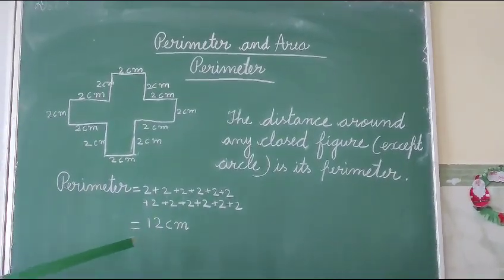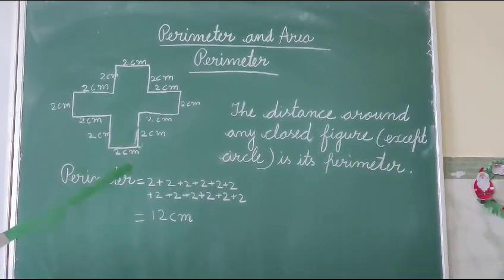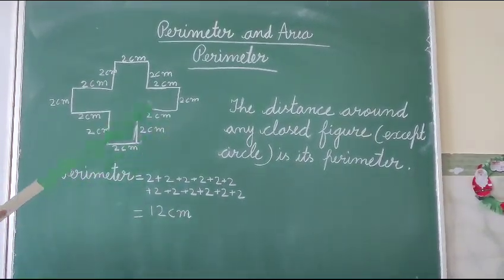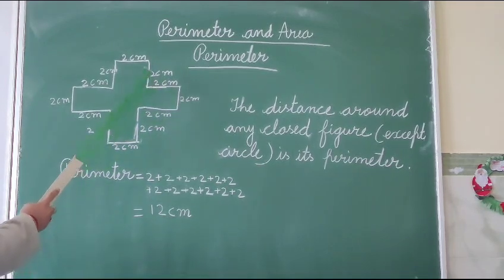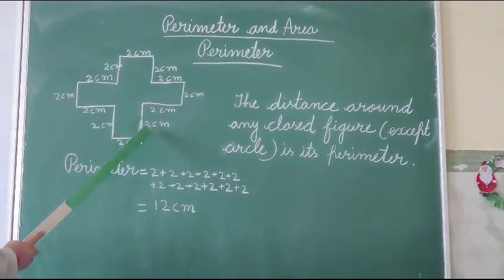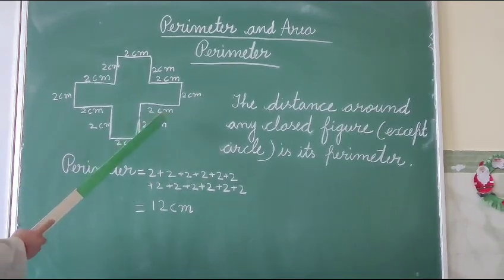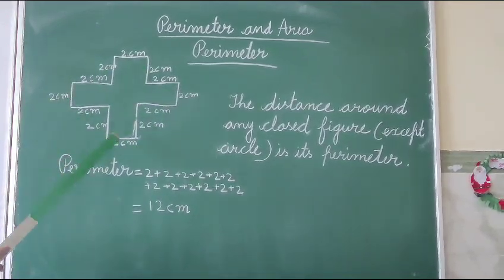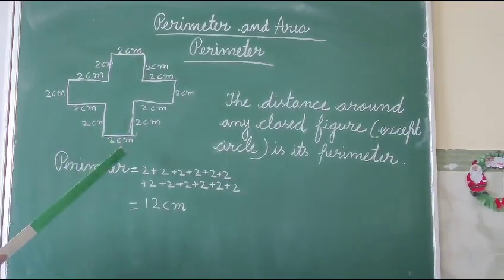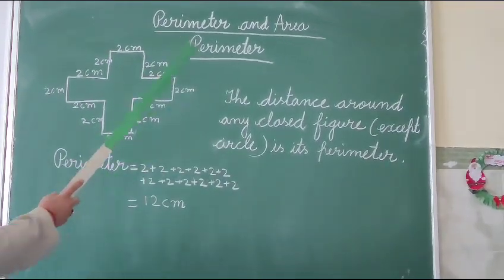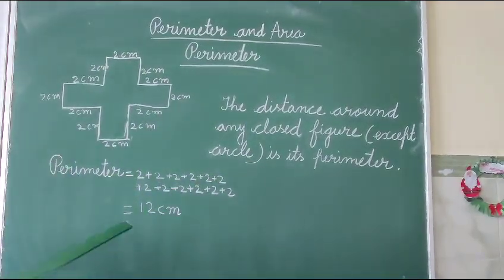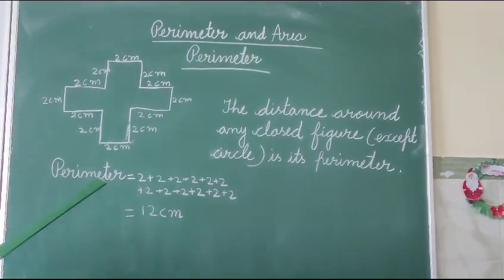I hope you have understood what is perimeter. Once again I am repeating the definition. What is perimeter? Perimeter is a distance of any closed figure. Not only this figure. Any closed figure except circle is its perimeter, length of all sides. Total of all sides. Understood? I hope it is understood. Now this definition, this figure and whatever I have written on the board, you write in your notes.